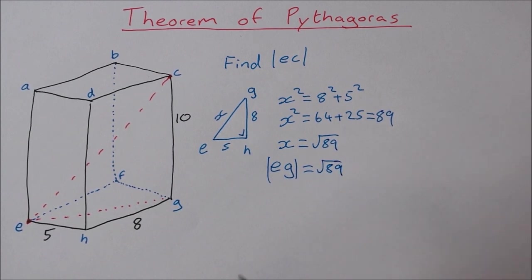Now I'm just going to leave it in surd form there like that. I'm not going to simplify it. I'm not going to write it as a decimal. I'm just going to leave it as square root 89.